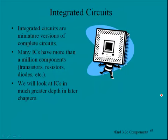And then finally, we mentioned integrated circuits. Integrated circuits are miniature versions of complete circuits. Many ICs have more than a million components. That's a million transistors, resistors, diodes, inductors, capacitors, etc. And we will look at ICs in much greater depth in later chapters.